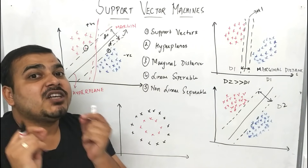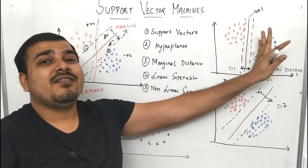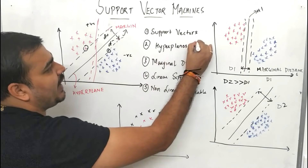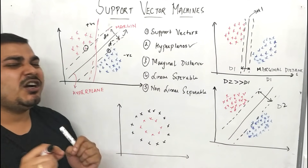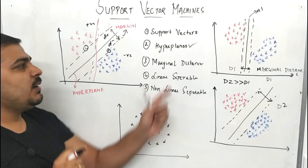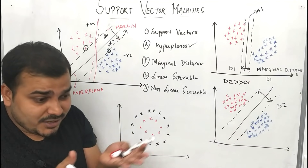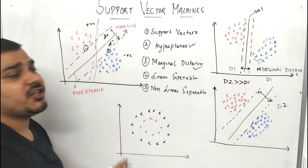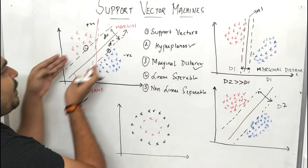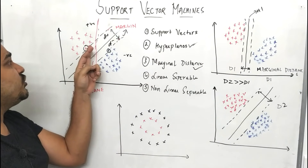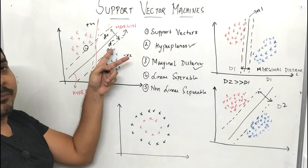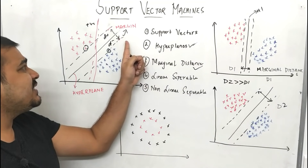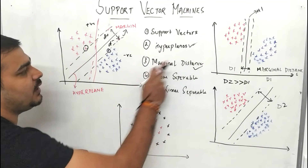Remember, in two dimensions we won't say hyperplane — we'll just say straight line. But in three or four dimensions, we say hyperplane because we use planes to divide those points. To summarize: we discussed hyperplane, we discussed marginal distance — which is the distance between two parallel lines created with respect to the nearest positive point and the nearest negative point. I can call these the marginal positive plane and the marginal negative plane.